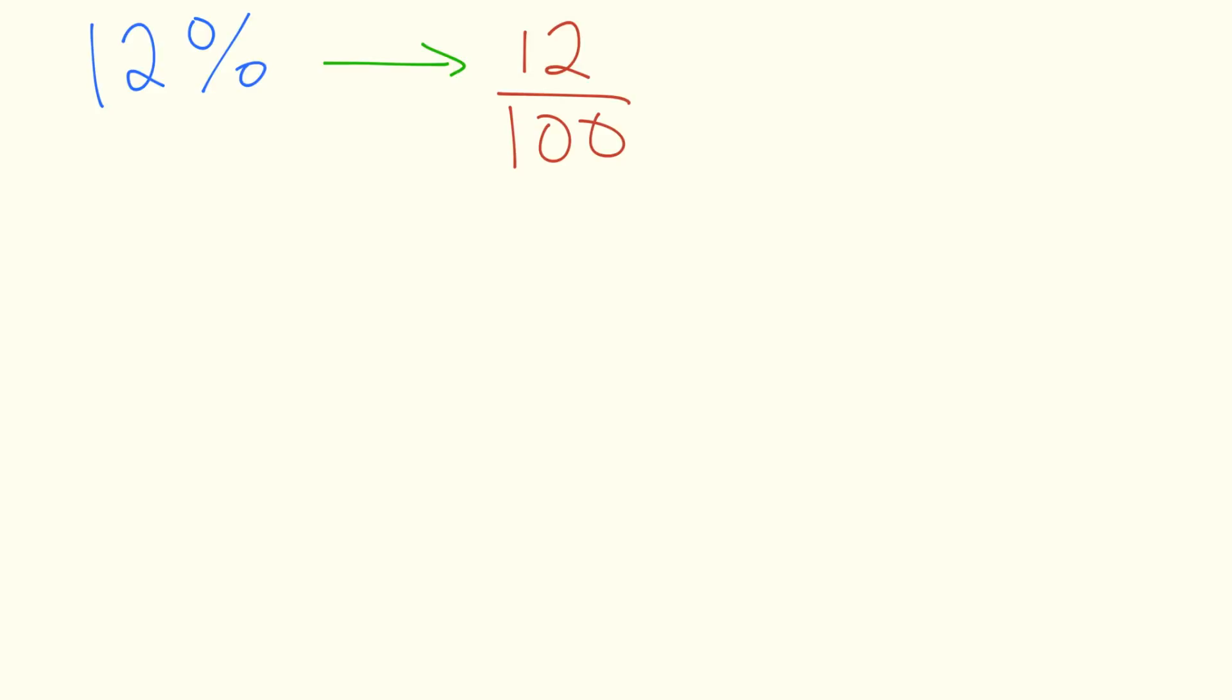We could simplify 12 over 100 by dividing both the top and the bottom by 4. So we would get 3 over 25. 12% as a fraction is 3 25ths.